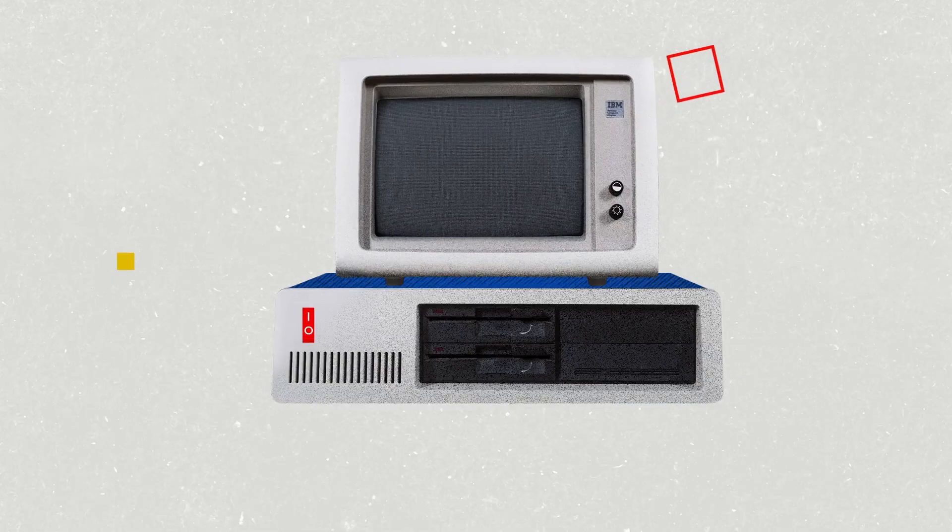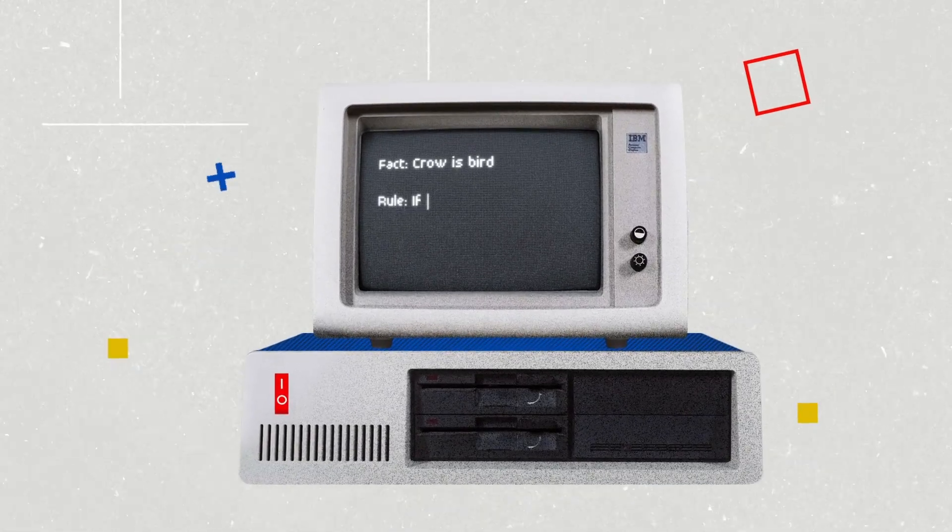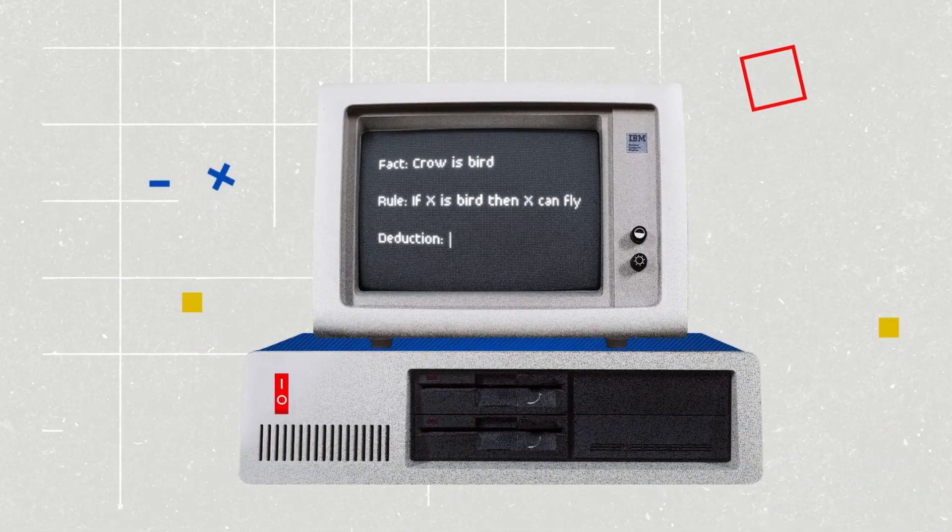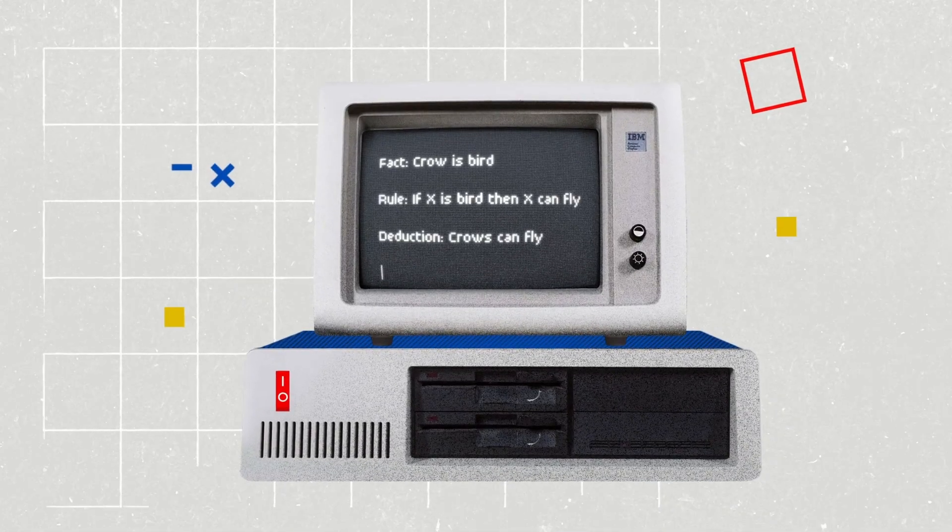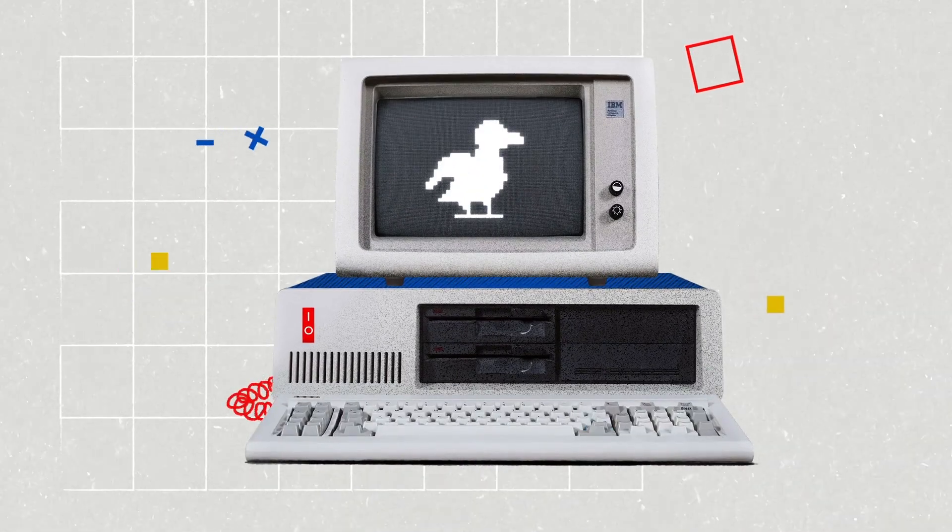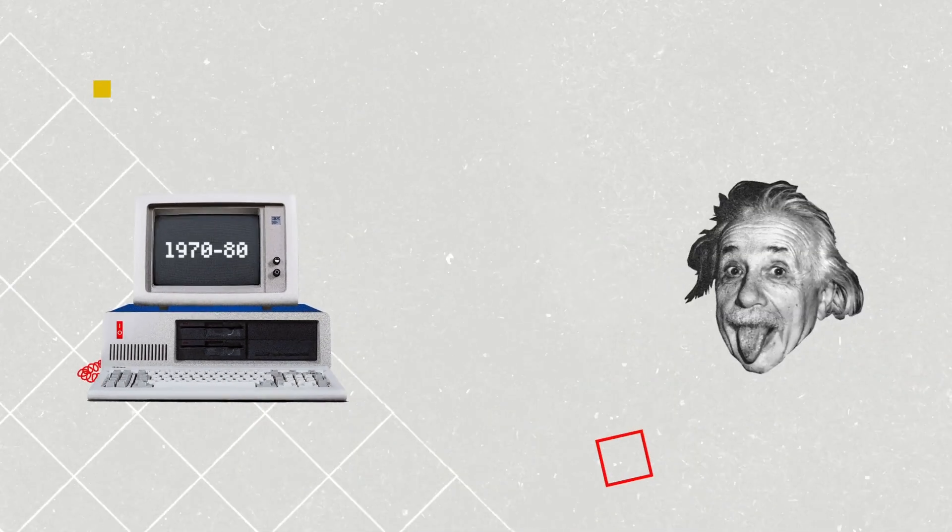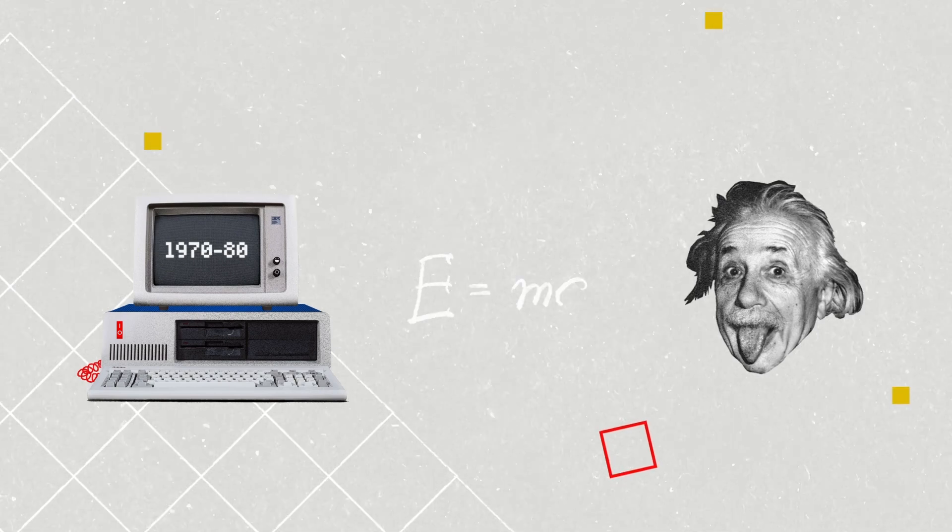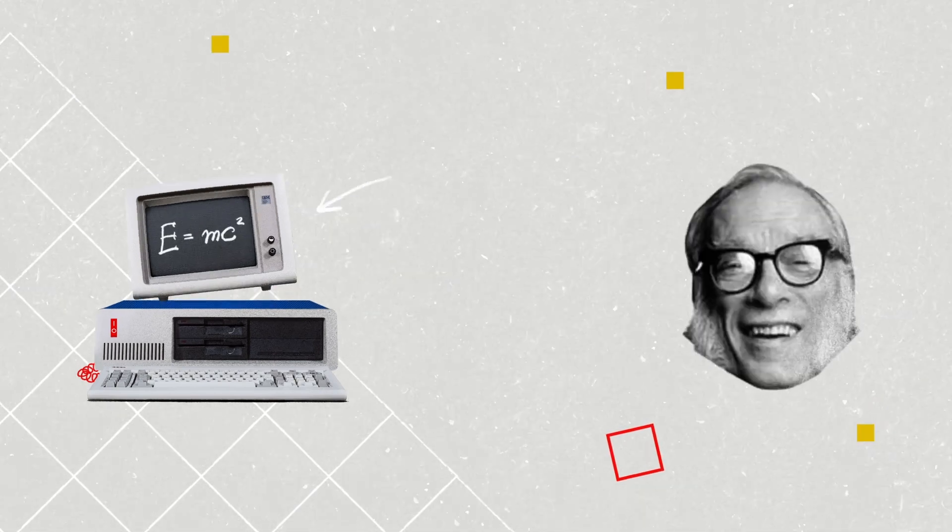It's based on the idea that by programming a computer with facts about a subject and the rules to operate on those facts, the system could then generate logical deductions. In the 1970s and 80s, computer programs called expert systems were programmed with facts related to a specific task, emulating a human expert.